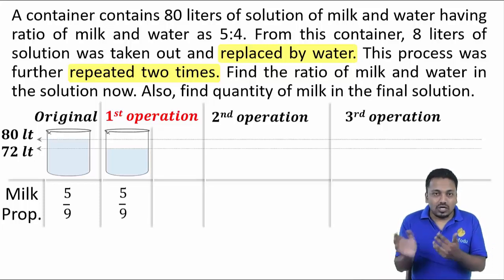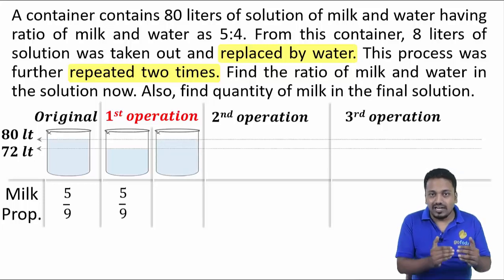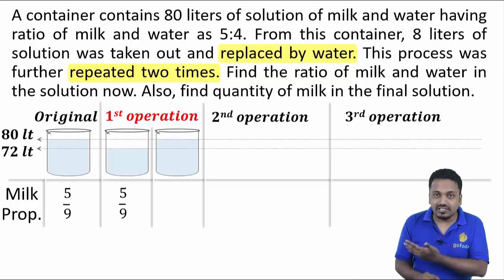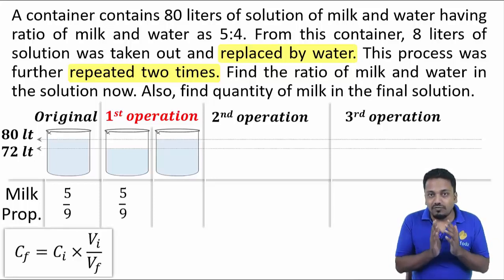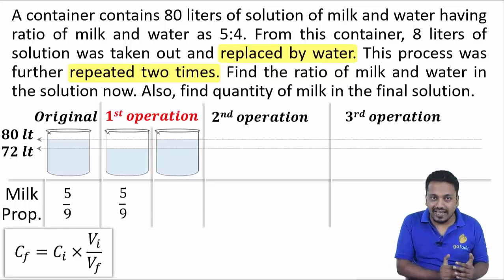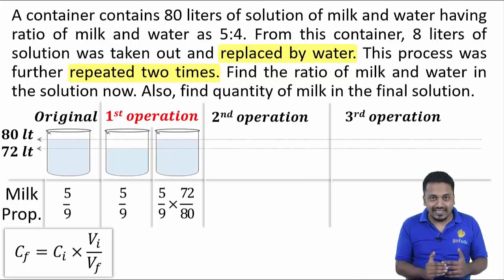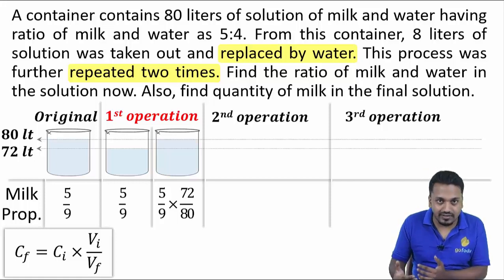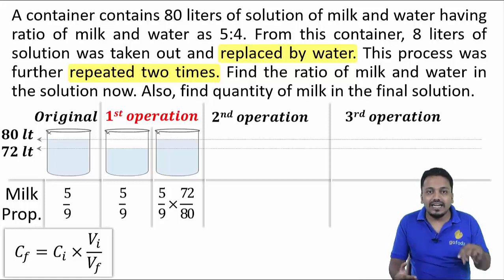Now, we add water and the final volume again becomes 80 liters. If you remember this formula, proportion of milk will be 5/9 × 72/80. In first operation, initial volume was 72 liters and on addition of 8 liters water, it finally becomes 80.